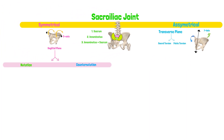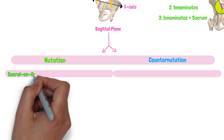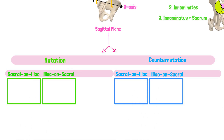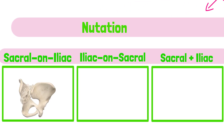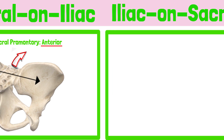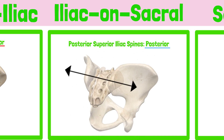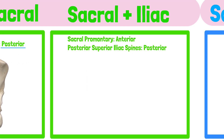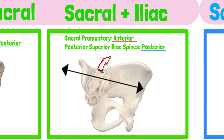Let's take a look at the symmetrical movements first: nutation and counter-nutation. In both cases, we observe sacrum on iliac movement, iliac on sacral movement, or movement of both counterparts. Sacral motion during nutation occurs by the anterior displacement of the sacral promontory in relation to the innominates. Innominate movement during nutation occurs by the posterior displacement of the posterior superior iliac spines in relation to the sacrum. Nutation can also be achieved by the movement of the sacrum and the innominates together — observe the sacral promontory move anterior and the posterior superior iliac spines move posterior.